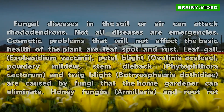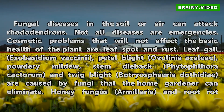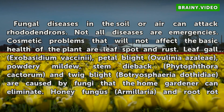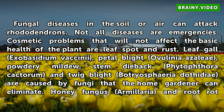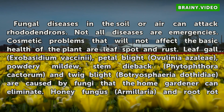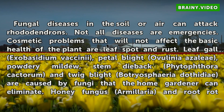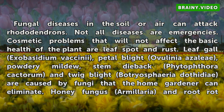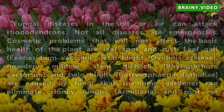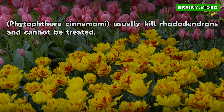Types. Fungal diseases in the soil or air can attack rhododendrons. Not all diseases are emergencies. Cosmetic problems that will not affect the basic health of the plant are leaf spot and rust. Leaf gall, petal blight, powdery mildew, stem dieback, and twig blight are caused by fungi that the home gardener can eliminate. Honey fungus and root rot usually kill rhododendrons and cannot be treated.